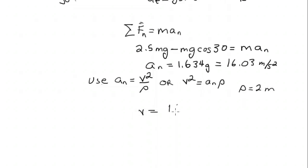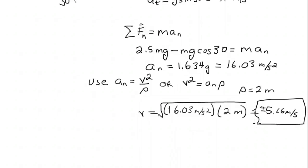From that, and this other formula where the normal acceleration is equal to the velocity squared divided by the radius, we can calculate the velocity, and there it is. It could be either plus or minus 5.66 meters per second.